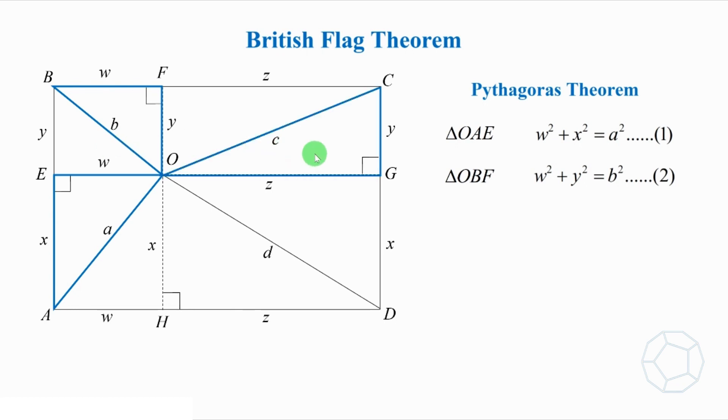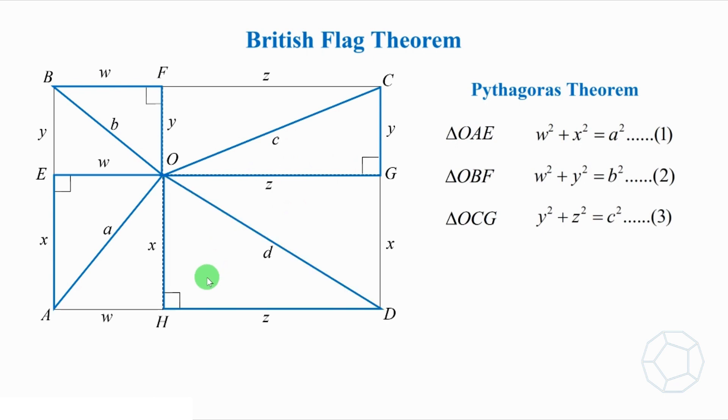Likewise, in triangle OCG, y² + z² = c². We call this equation 3. Lastly, in triangle ODH, x² + z² = d². Let's call this equation 4.